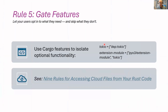Rule five: if you're going to provide features like Python support or cloud reading, I recommend gating them using Cargo features, so users don't have to include all the code required to support those features if they don't want to.